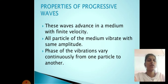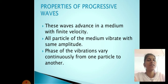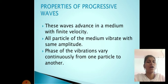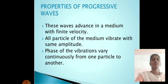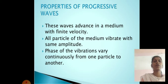Next, properties of progressive waves. First property: these waves advance in a medium with finite velocity. Second property: all particles of the medium vibrate with the same amplitude. Third property: the phase of vibrations varies continuously from one particle to another.